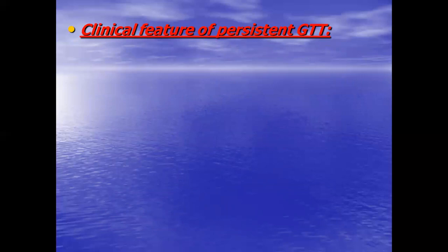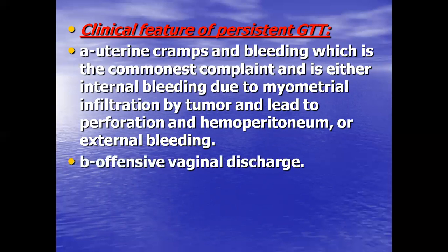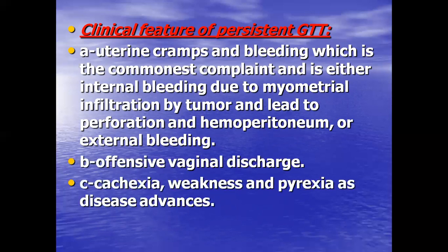Clinically, patients usually present with uterine cramps and bleeding, which is the most common complaint. Bleeding may be internal due to myometrial infiltration by tumor leading to perforation and hemoperitoneum, or external bleeding with offensive vaginal discharge. Cachexia, weakness, and pyrexia occur as the disease advances.